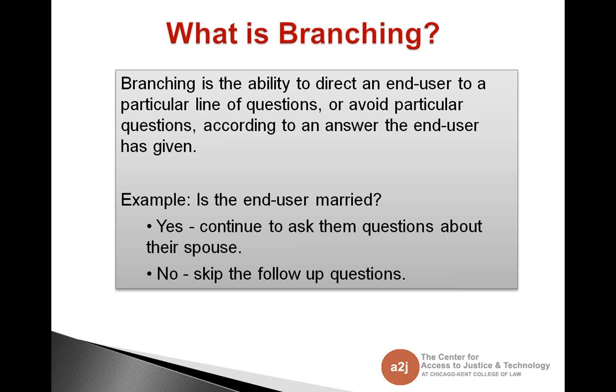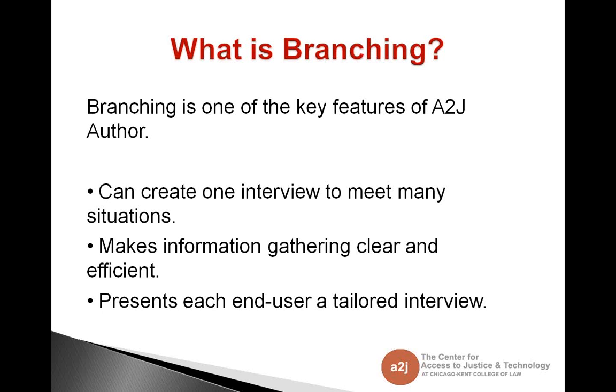You don't want to make the end user go through a whole line of questioning that isn't relevant to their situation. So for example, you could ask the end user, are you married? If they click the yes button, then you would continue to ask them questions about their spouse. If they answer no, then you can skip the spouse information altogether because it's not relevant. Branching is one of the key features of A to J Author. You can create one interview to meet many situations. It makes information gathering clear and efficient. And you can present each end user with a tailored interview.